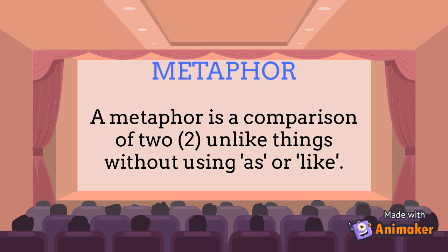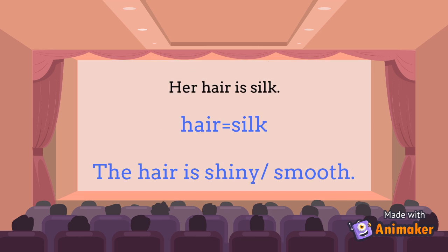Metaphor: the comparison of two unlike things without using 'as' or 'like.' For example, 'Her hair is silk' — hair and silk are being compared. Silk is normally smooth and shiny, so the writer is saying that the hair is smooth and shiny.